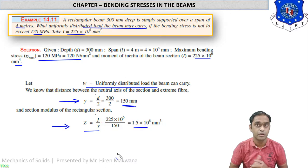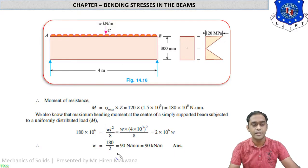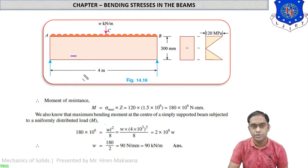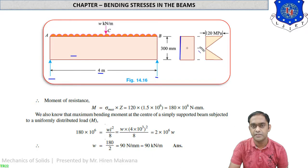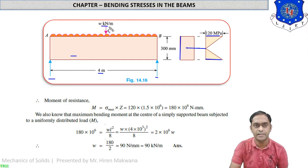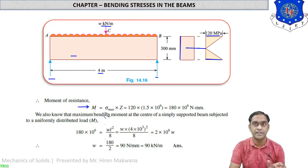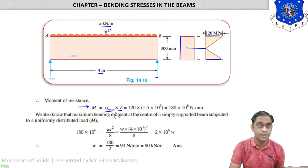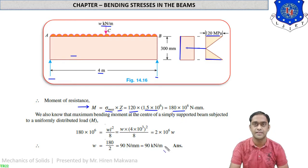Moment of resistance M = sigma × Z, since sigma = M/Z is our main formula from the flexure equation. Here sigma = 120 MPa (given) and Z = 1.5 × 10⁶ mm³ (calculated). So M = 120 × 1.5 × 10⁶ = 180 × 10⁶ N·mm.